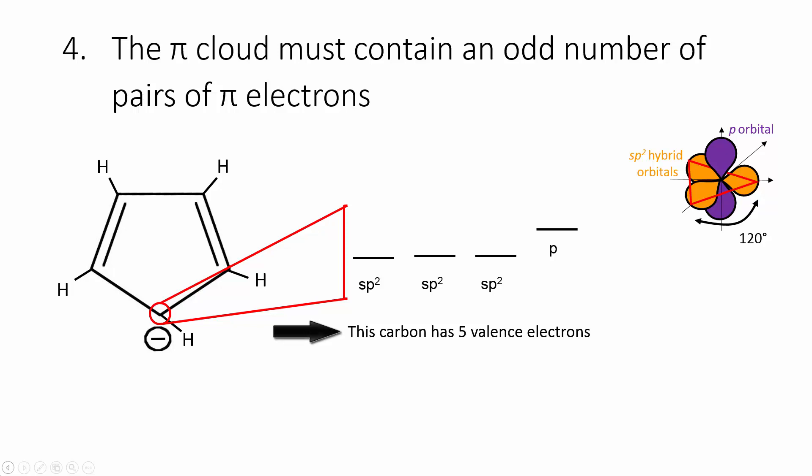We can try distributing the five valence electrons in the orbitals, just like we did with the previous carbon. Again, we're going to distribute three of the electrons into the sp² hybrid orbitals. These electrons will be used to form the sigma bonds. One sigma bond is formed for each of the two carbons that it is adjacent to, and one is used to form a bond with the hydrogen that it is bonded to. This leaves two electrons in the p-orbital.